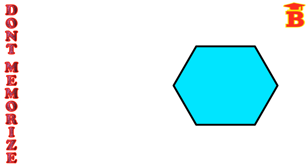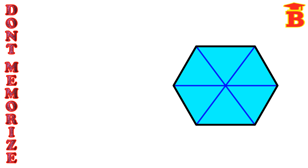A hexagon is a six-sided closed diagram. Draw the hexagon and also draw the diagonals, and take 1 in the center. We know that there are six trigonometric functions.